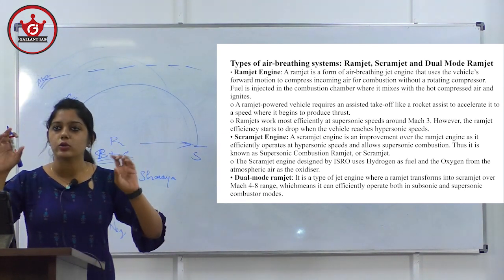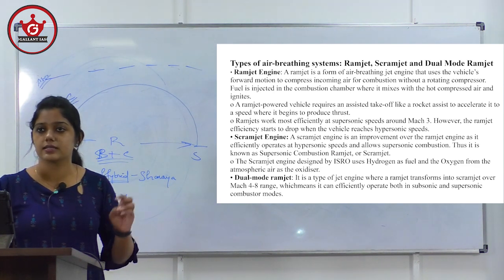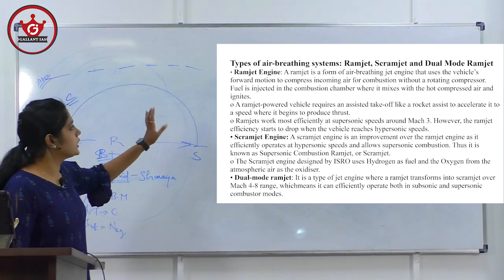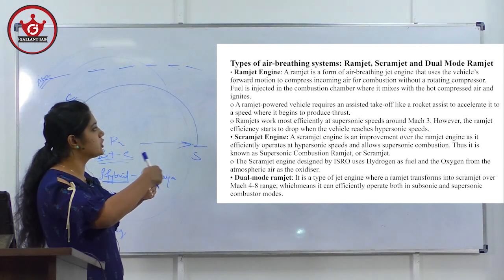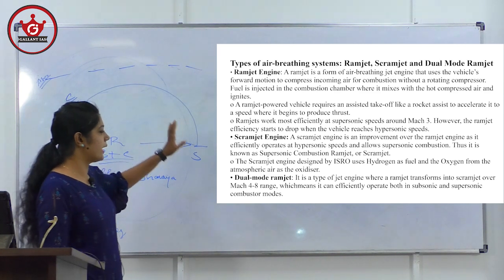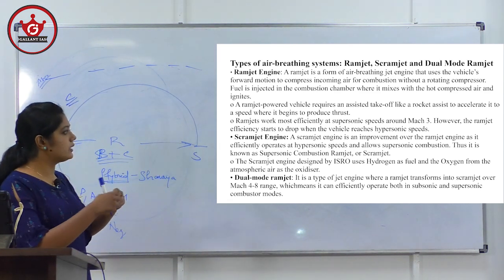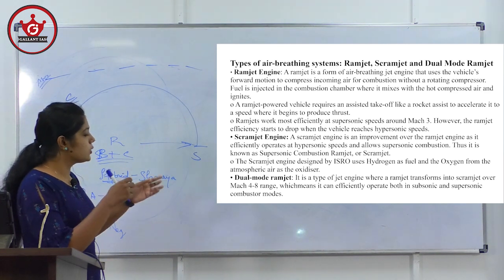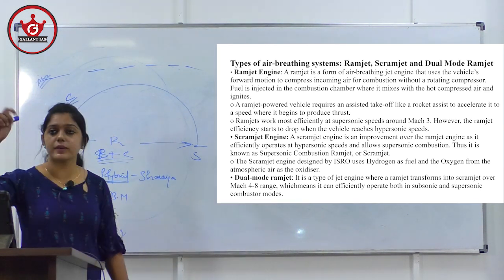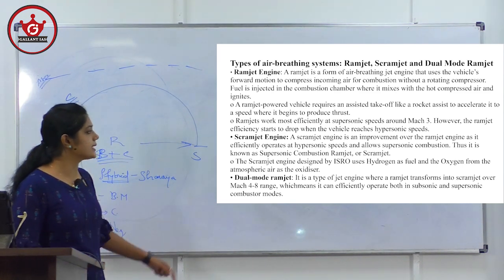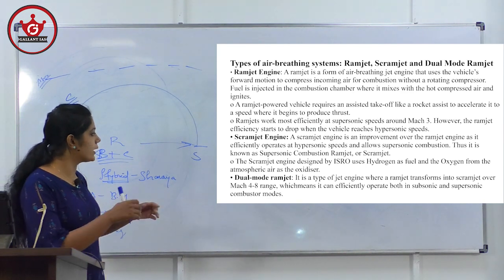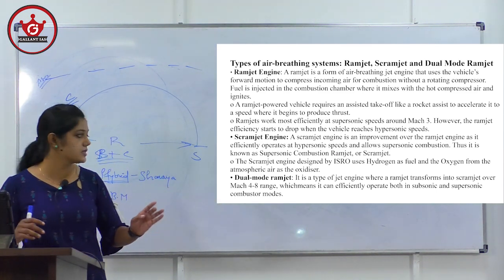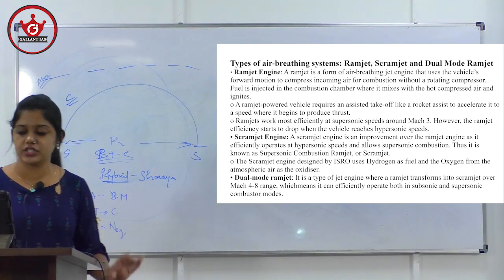Air breathing systems take oxygen from the atmosphere and compress it. A ramjet engine is a form of air-breathing engine that uses the vehicle's forward motion to compress incoming air for combustion without a rotating compressor. A scramjet is an improvement over ramjet — it works at supersonic speeds; it stands for Supersonic Combustion Ramjet. It uses hydrogen as fuel and atmospheric oxygen as oxidizer. A dual-mode ramjet transforms from ramjet to scramjet over a Mach 4 to 8 range, efficiently operating in both subsonic and supersonic combustor modes.